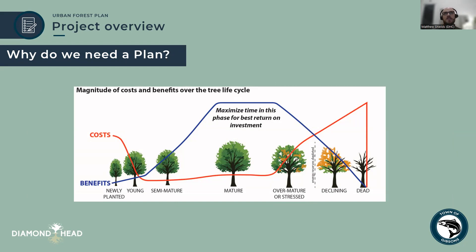Gibsons is making advances in natural asset management, and some forested areas are already valued for their role in managing stormwater runoff. Trees with their urban forest benefits can also be incorporated into the town's asset management, although they are not currently. Without active management, the urban forest can have too many trees where the costs of management outweigh the benefits — a young tree that ends its life prematurely doesn't reach the stage where it provides maximum value to the community.